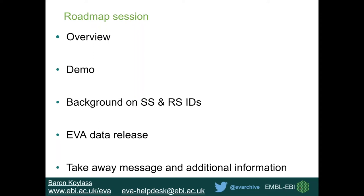Just going over a quick roadmap. First I'll go over a quick overview covering the EVA demo, then go back to the slides for background information on SS and RSIDs, and then cover the bulk of the webinar which is the data release. Finally I'll leave some additional information to help with variant data, such as some variant data templates and contacts you can use if you have specific variants you wish to look at.